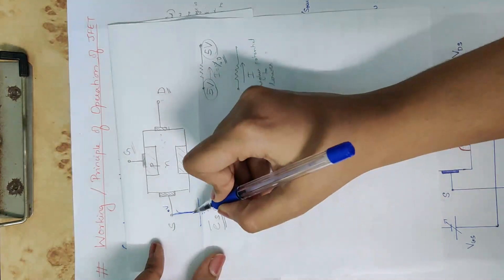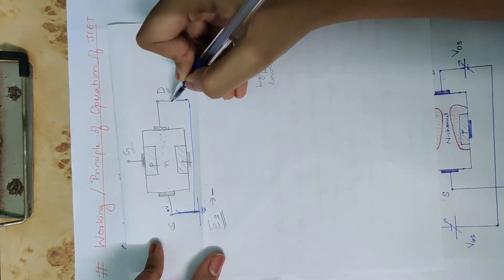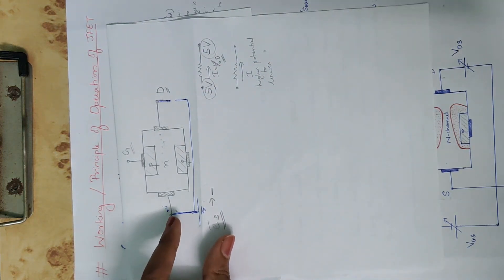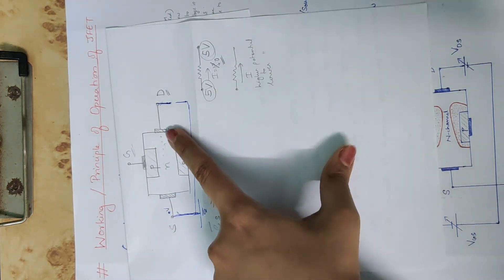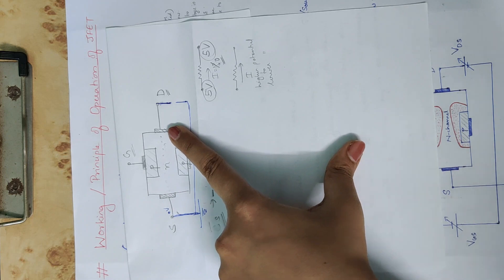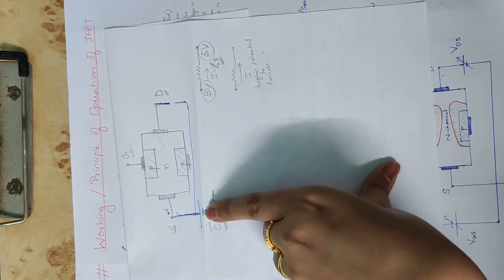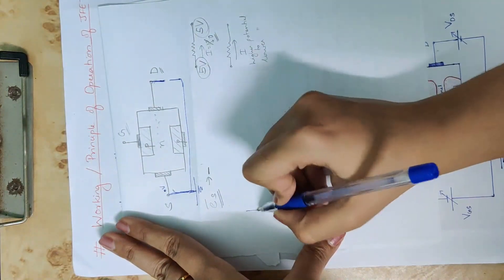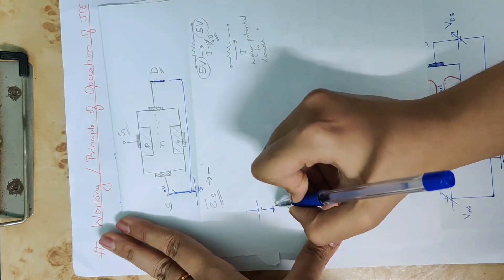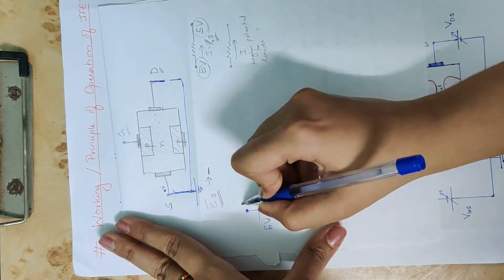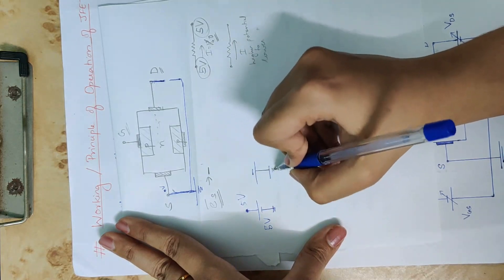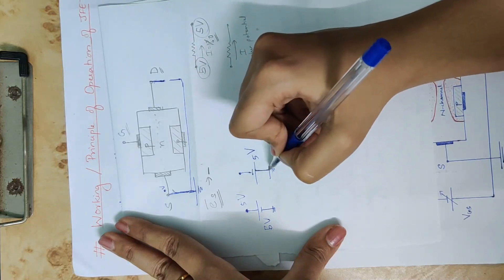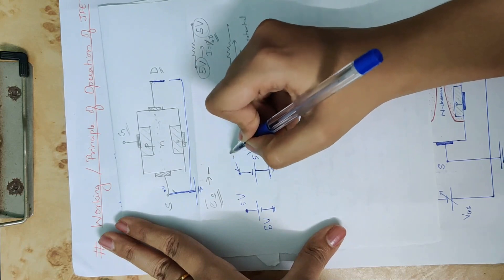Now we call the drain-source voltage VDS. We connect a battery where the negative terminal connects to ground. Assuming 5 volts, the ground is at 0V and the positive terminal is grounded, so this point is at minus 5 volts. This is a 5-volt battery.